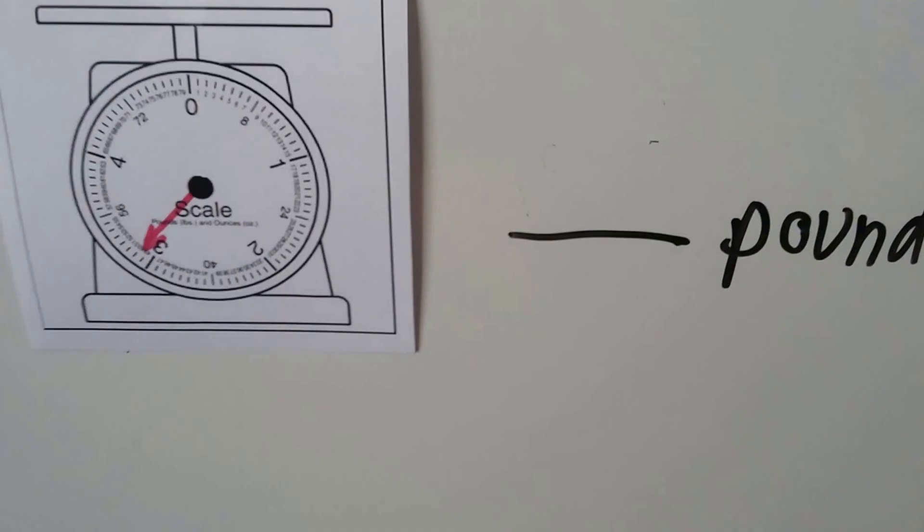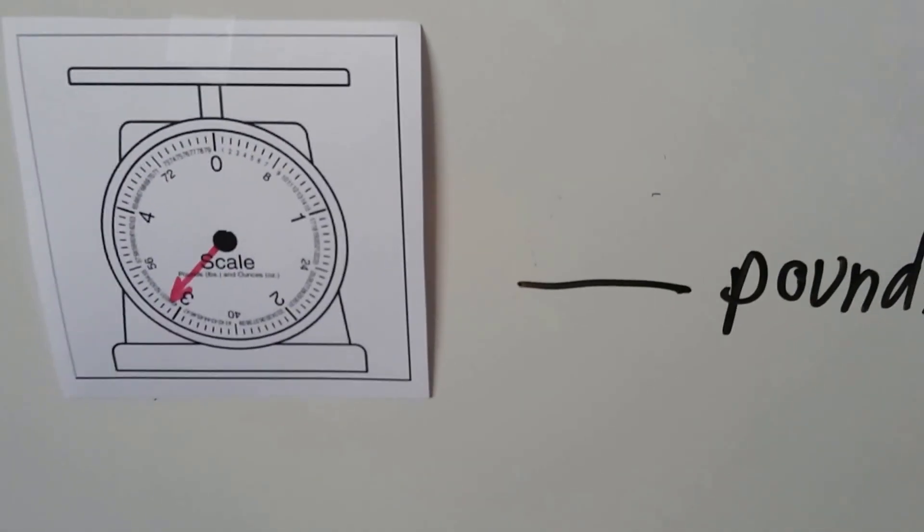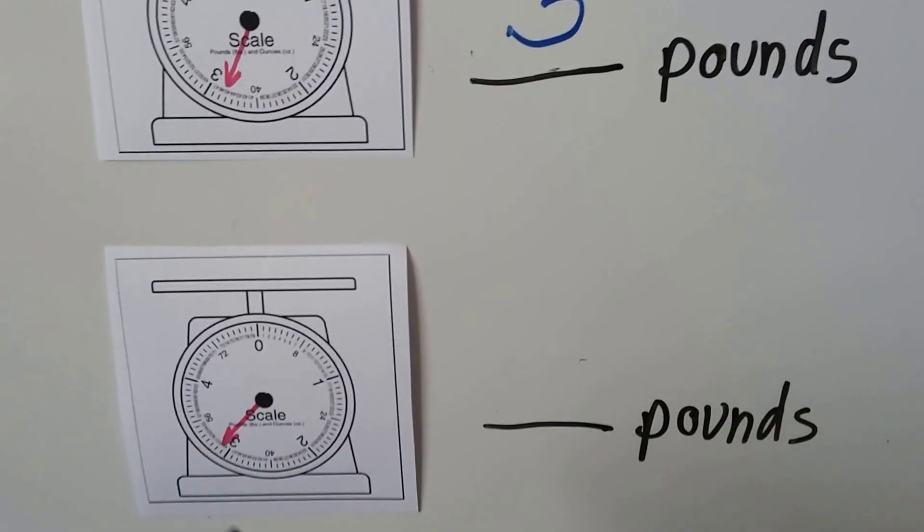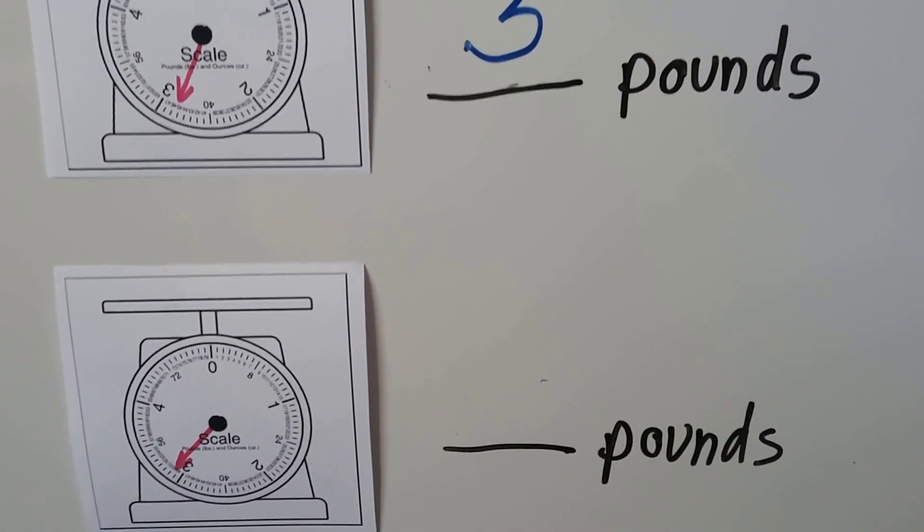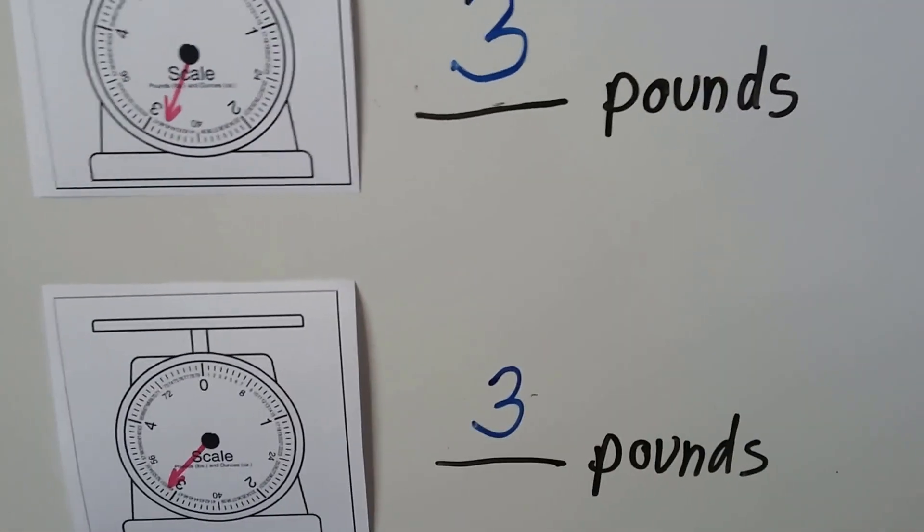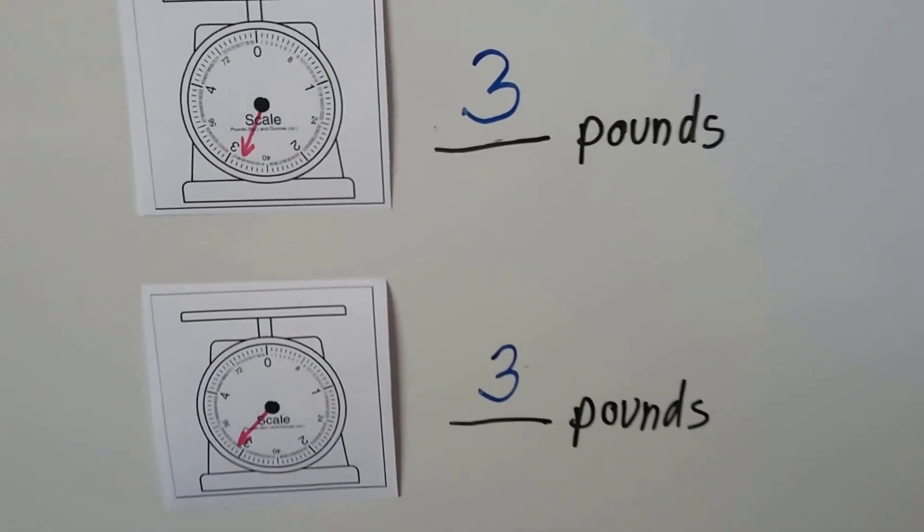How about here? Now which is the nearest pound? Oh, look at that. This one was a little bit before the three. This one's a little bit after three, but three is still the nearest pound. So the nearest pound would be three pounds.